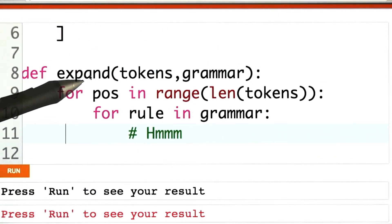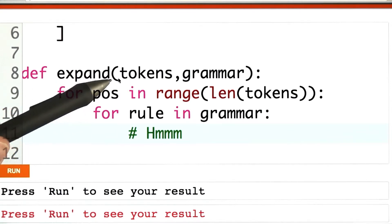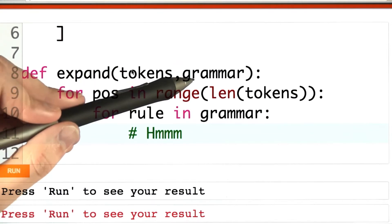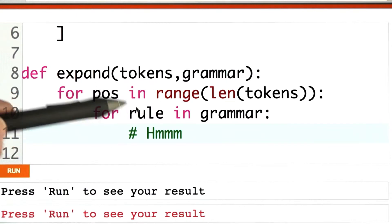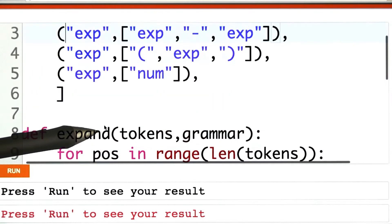And where I'm going to need your help is given a list of tokens and a grammar, I want to find all possible ways to expand it using those rules. Let me just show you what I mean by that.